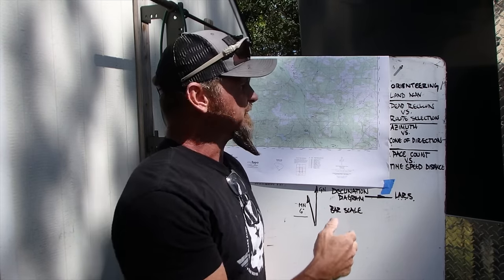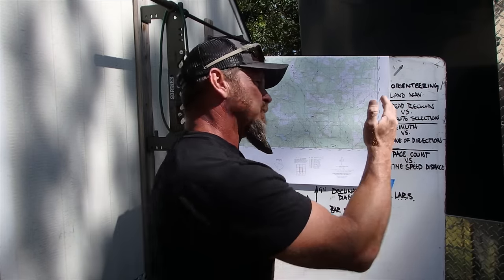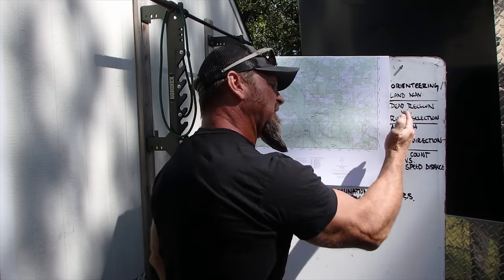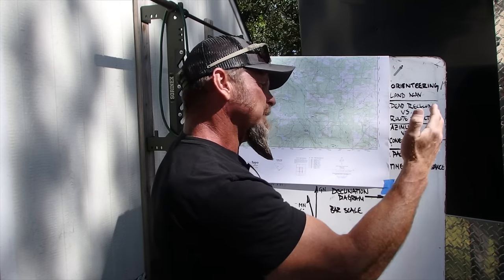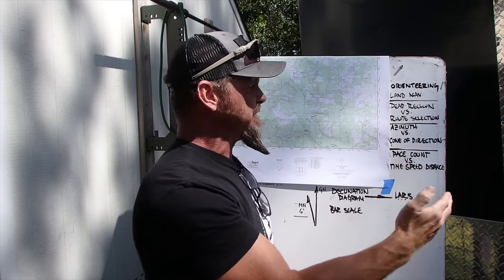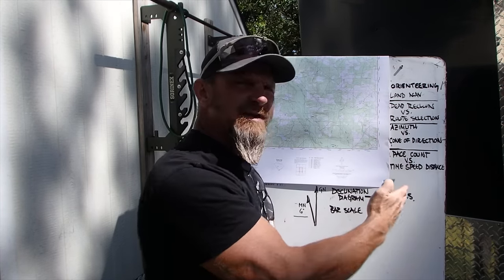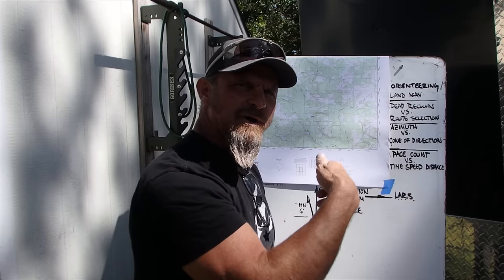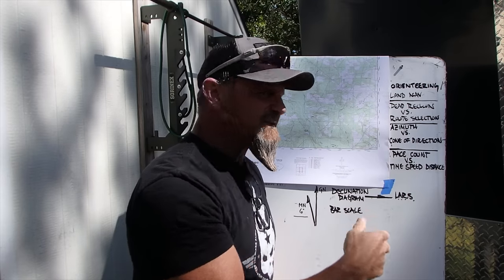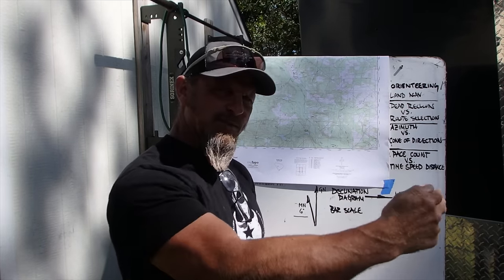In our orienteering video, we talked about some of the rules of thumb: we're going to select a route, we're going to use a general cone of direction, we're going to use time, speed, and distance to measure our distance, and we're going to have checkpoints in place.